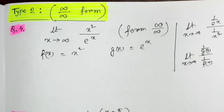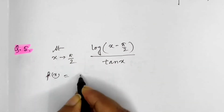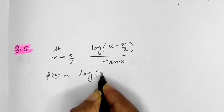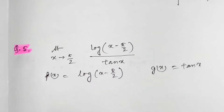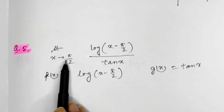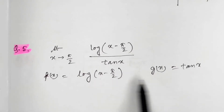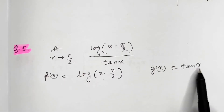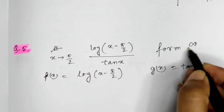Gradually I'll show you how to solve — first let me show a few more identification examples. Another example: f(x) = log(x − π/2) and g(x) = tan x. When x tends to π/2, f(x) = log 0 = −∞ (infinity), and g(x) = tan(π/2) = ∞. So this is in the form of infinity by infinity.